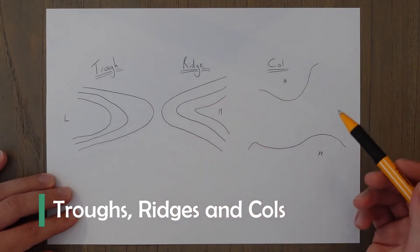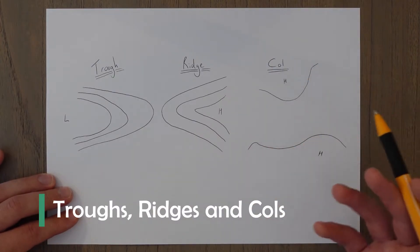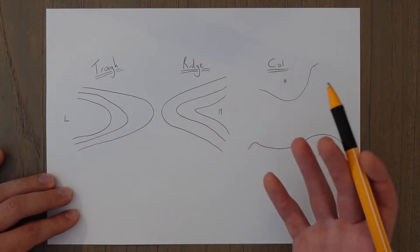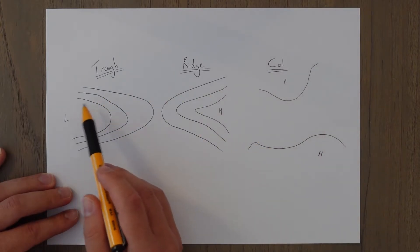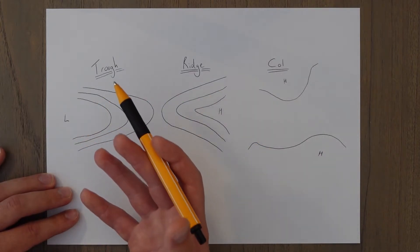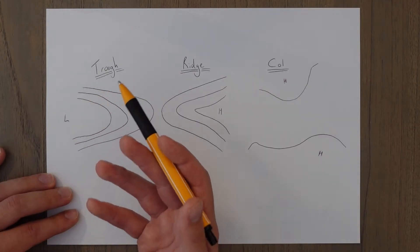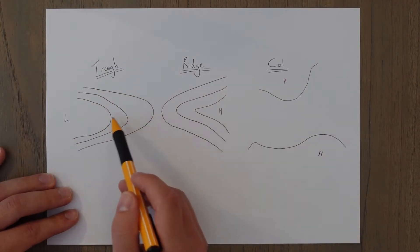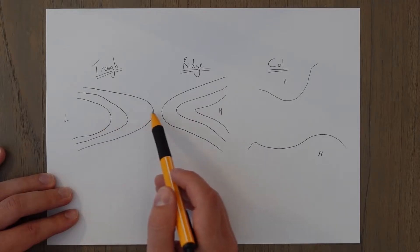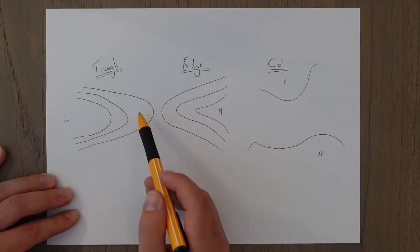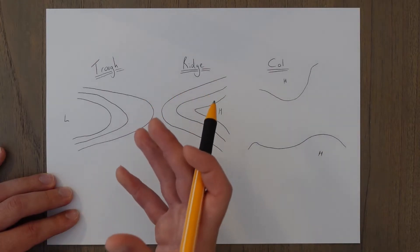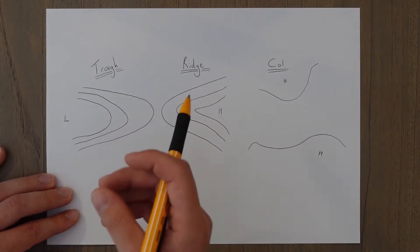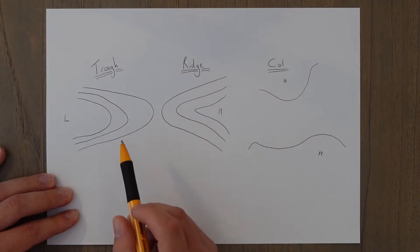So troughs, ridges and cols are sort of lesser features on an isobar chart, but still have fairly predictable weather. So a trough is like a valley of low pressure and therefore produces weather associated with a low depression, but in a line sort of following the general valley of low pressure. So you get your cumuliform clouds.